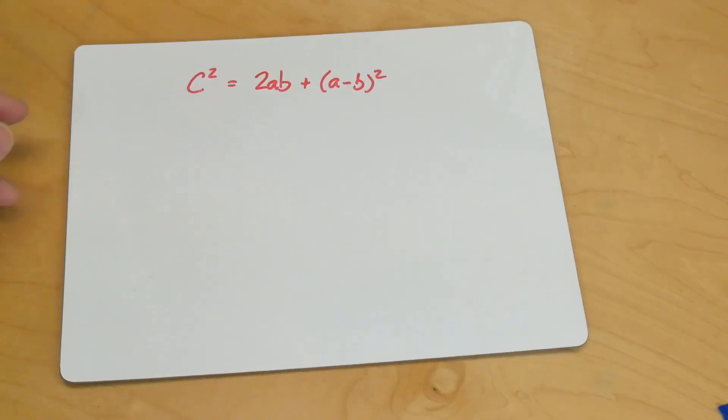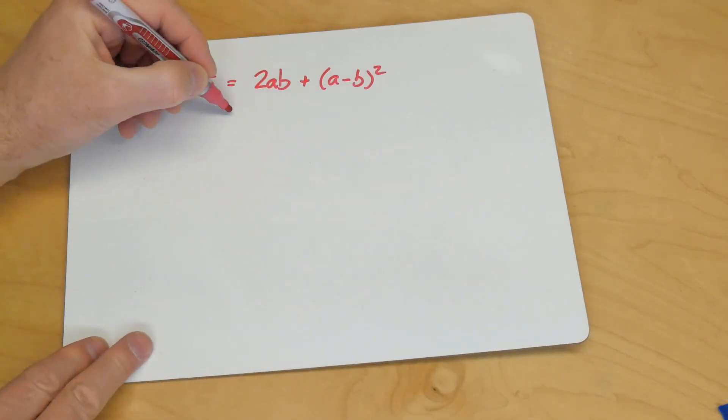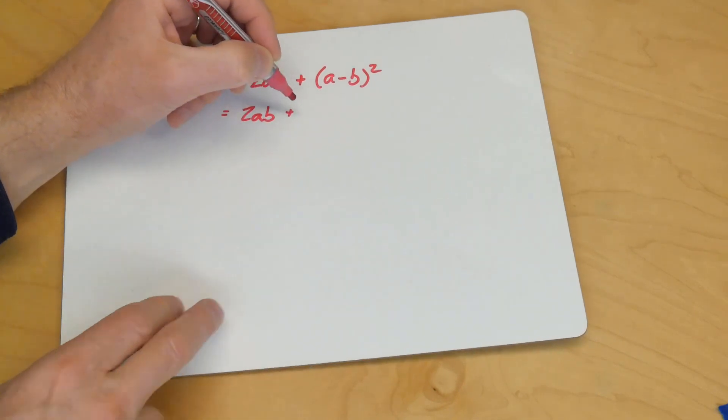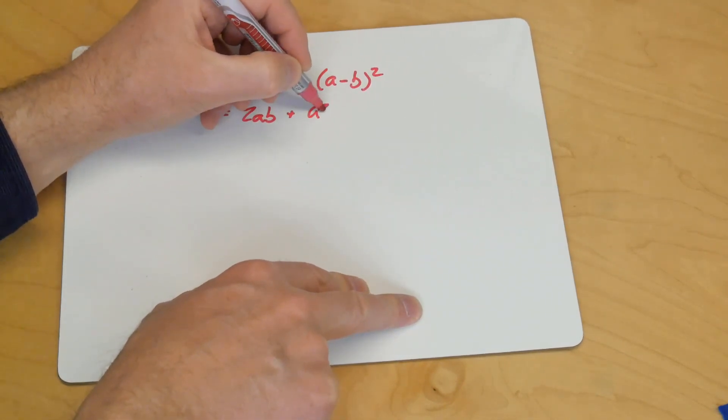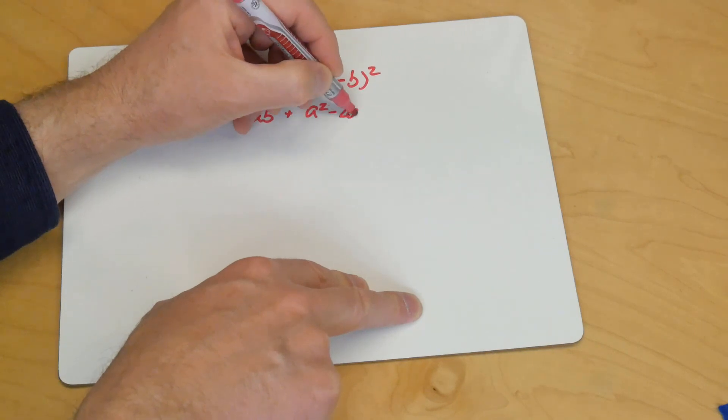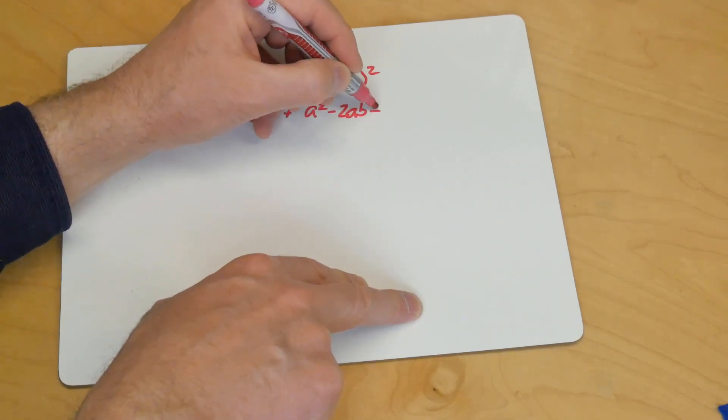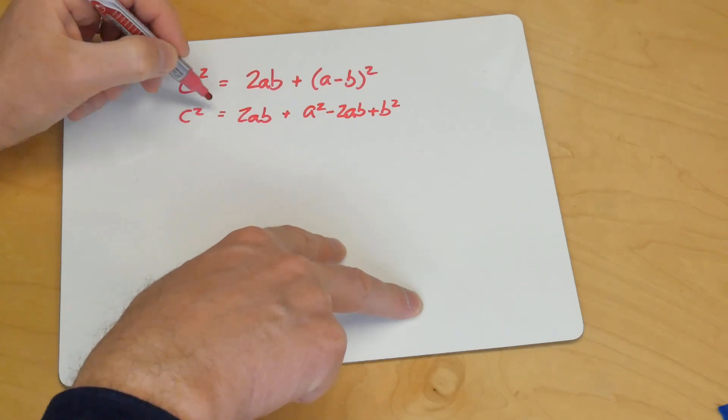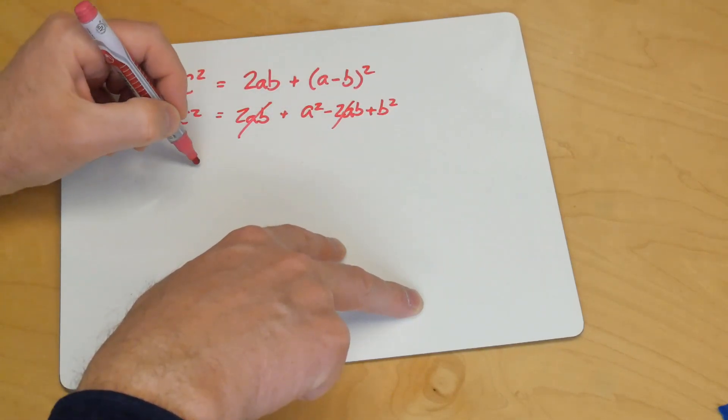Well, let's just expand the right-hand side here. a squared minus 2ab plus b squared. And that all equals c squared. Well, that and that cancel out.